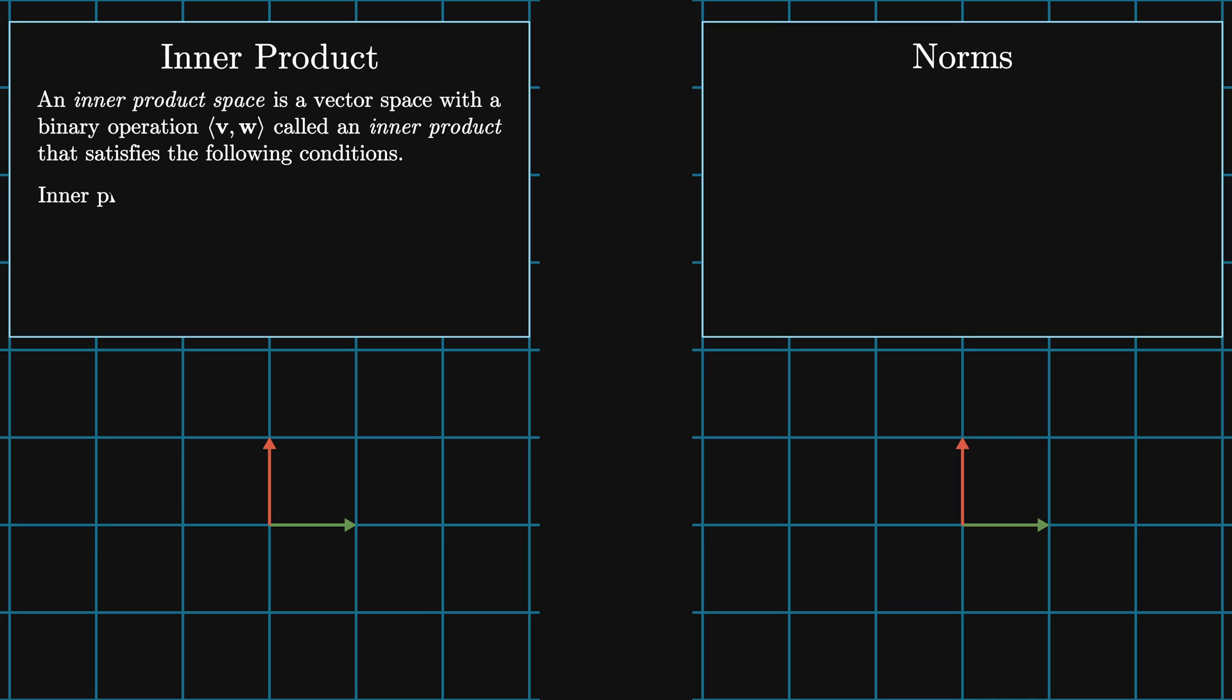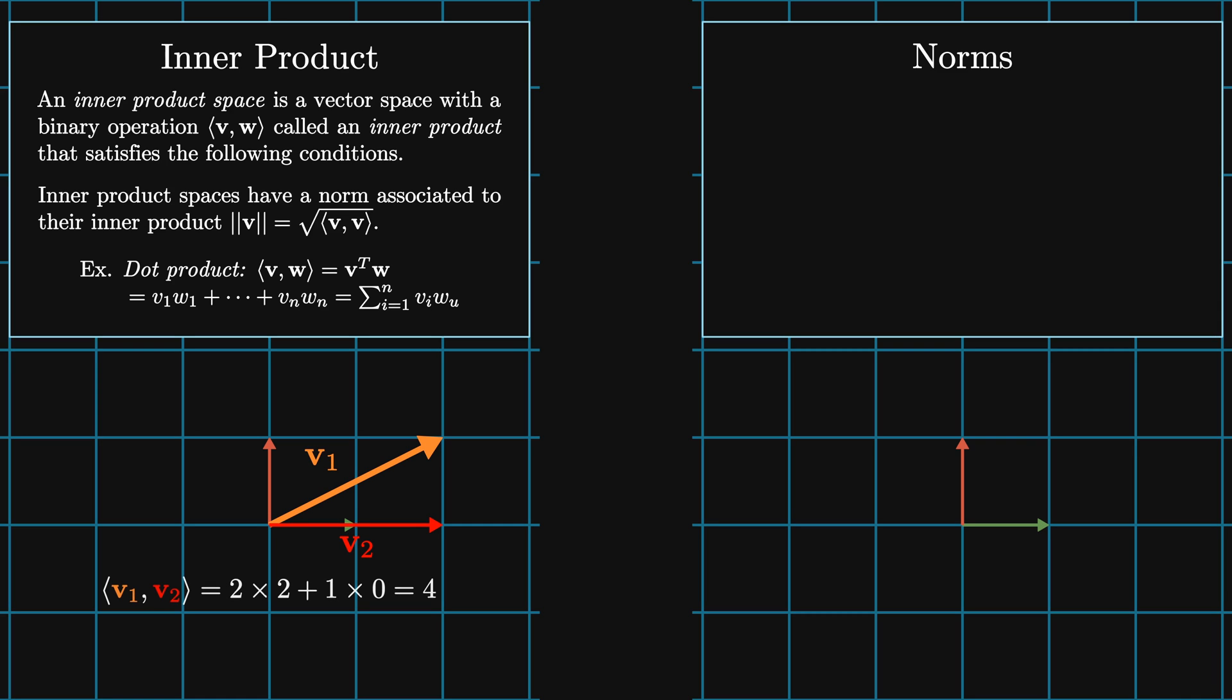Inner product spaces have a norm associated to their inner product, denoted by the magnitude of v, which is the square root of the inner product of v with itself. The Euclidean dot product is an example of an inner product. Here we're looking at the dot product of v1 with v2. This gives us 2 times 2 plus 1 times 0 is equal to 4.